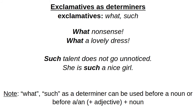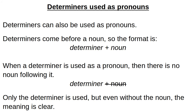We can also use exclamatives as determiners, like 'what' and 'such.' Examples: 'what a shame!'; 'what a waste!'; 'what nonsense!'; 'what a lovely dress!' Here 'what' is the determiner before the noun 'nonsense.' We can also use a determiner before an indefinite article 'a' or 'an,' optionally followed by an adjective, then a noun — for example, 'what a lovely dress' or 'what a dress.' So 'what' and 'such' can be used before a noun or before 'a/an' + adjective + noun. Examples of 'such': 'she is such a nice girl'; 'such talent does not go unnoticed.'